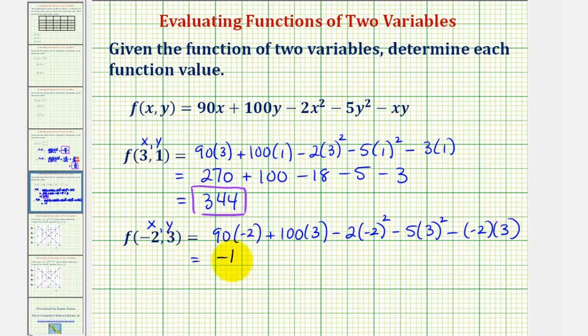So here we'd have negative 180, plus 300. Negative two squared is four, four times two is eight, so we have minus eight. And here we have three squared, that's nine times five, that's minus 45. And then here we have minus negative six, which would become plus six.